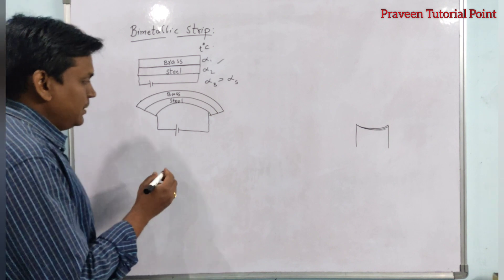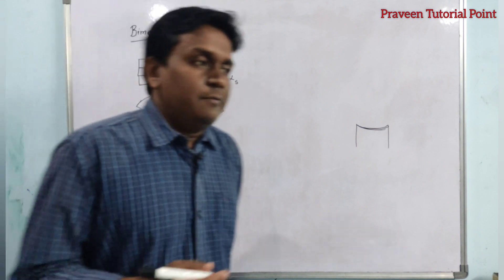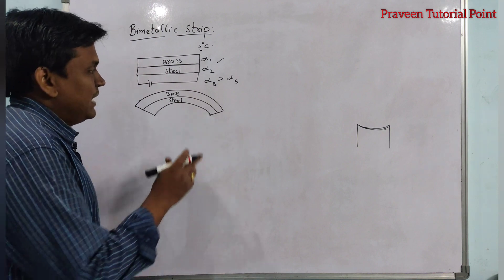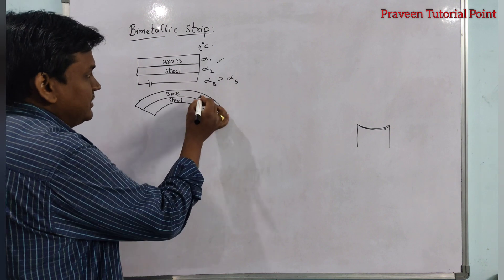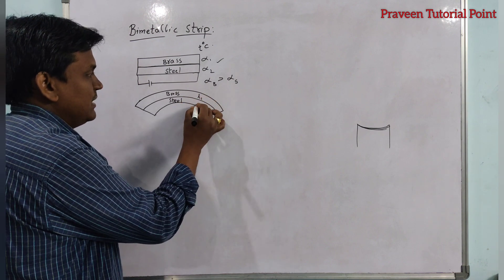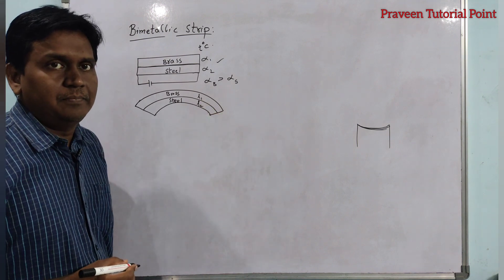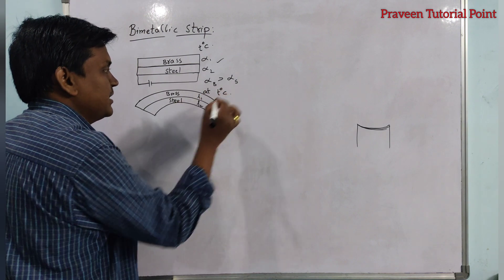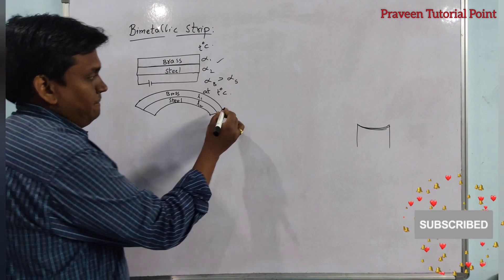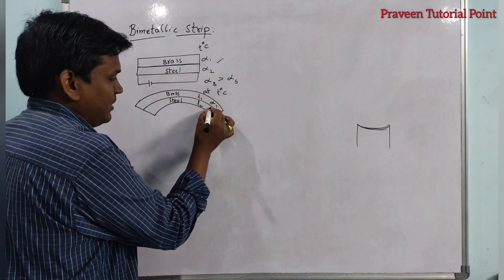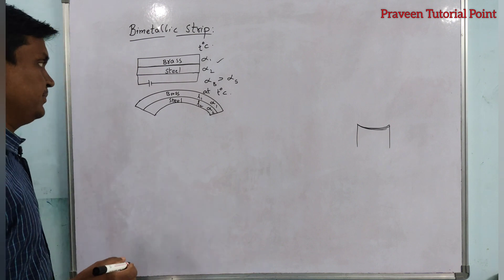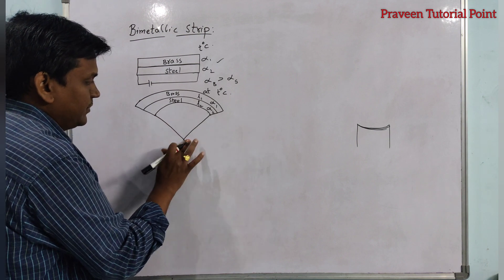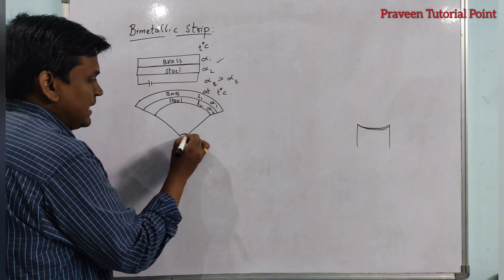Coming to the application of this bimetallic strip — here we will find out the radius of curvature of the bimetallic strip. Due to heating it bends. The brass strip has length l1 and the steel strip has length l2. At t degrees Celsius they have these lengths. The coefficient of linear expansion of brass is alpha 1 and of steel is alpha 2. If you draw a line, it bends to some angle that I am naming phi.